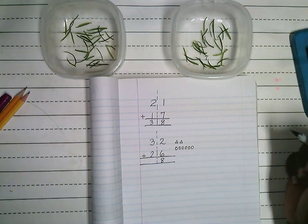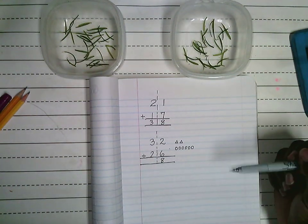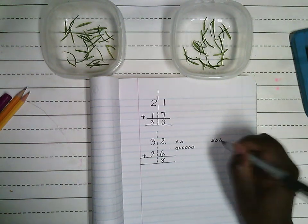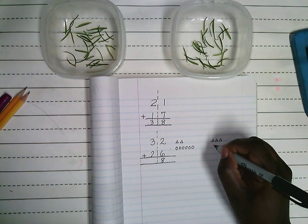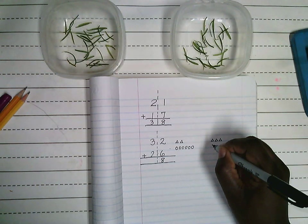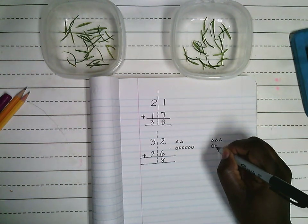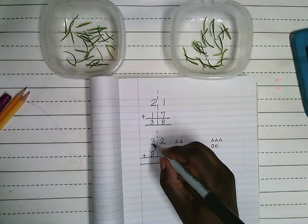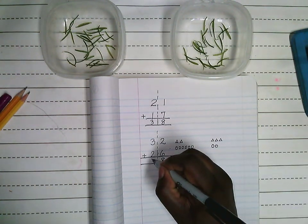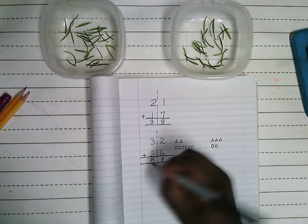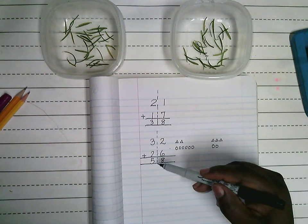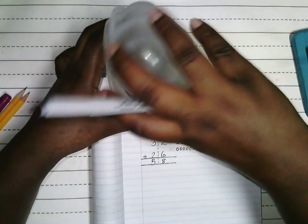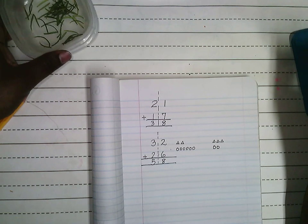Now I'm going to add the digits in the tens place. I have three tens and two tens. Three tens plus two tens equals five tens. So my sum or the total is 58. That means when I put these two together, I have 58 sprigs of rosemary.